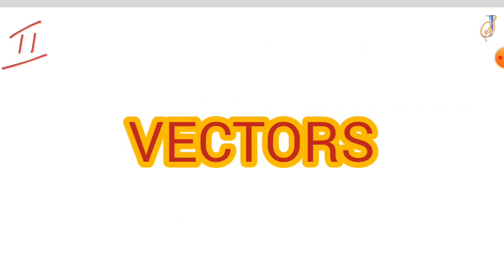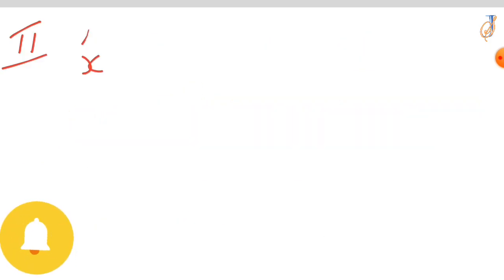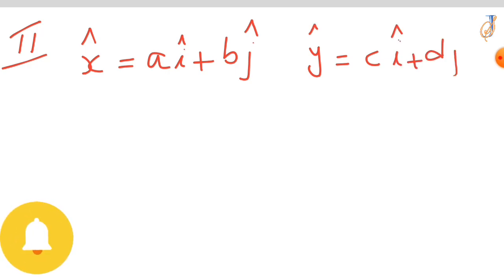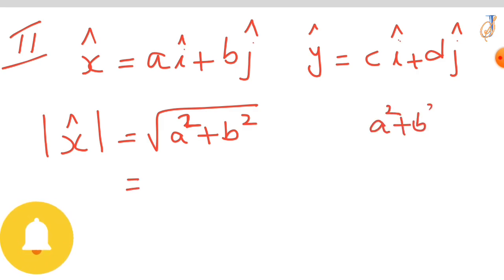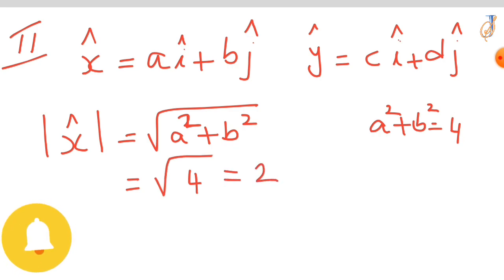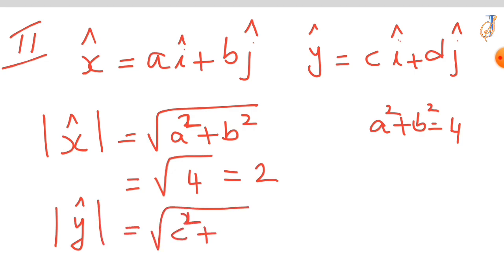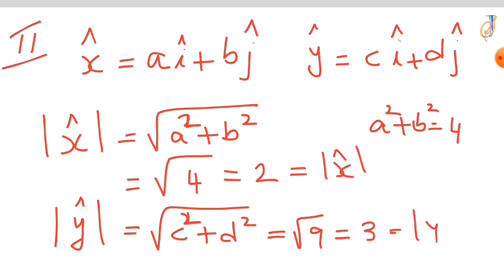Now let's try the second method using vectors. Let us assume vector x equal to ai plus bj and vector y equal to ci plus dj. The modulus of x is the square root of a² plus b². From the given equation, a² plus b² equals 4, so the modulus of x equals root 4, which is 2. Similarly, the modulus of y is the square root of c² plus d², and since c² plus d² equals 9, the modulus of y is 3.